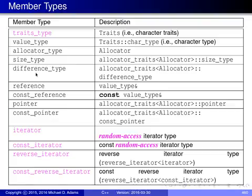Difference type is a signed integral type used when a signed quantity is needed, for example to measure the distance between elements in a string. Reference and const_reference are references and const references to value_type — the individual character type. Pointer and const_pointer are pointers used by the allocator. Iterator, const_iterator, reverse_iterator, and const_reverse_iterator are all random access iterator types.